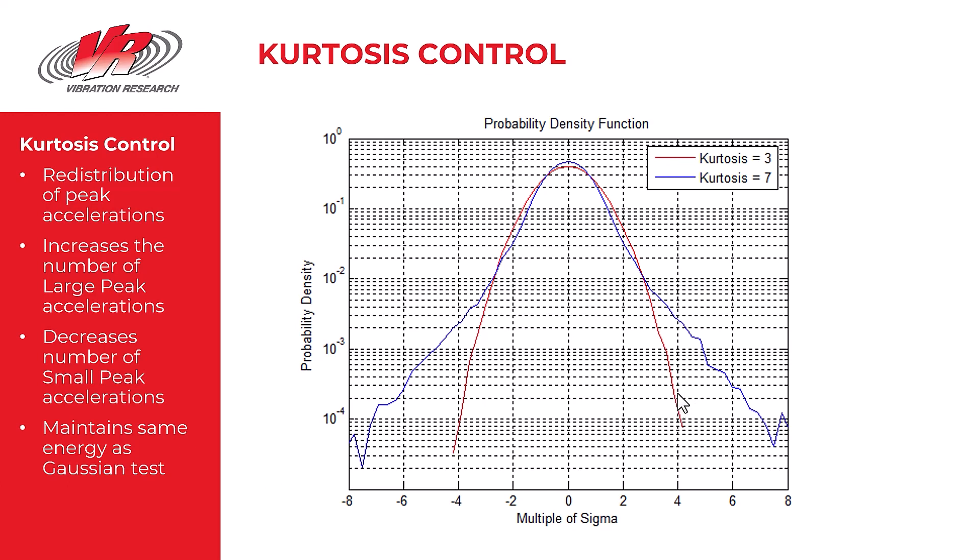And what we've done here is we've redistributed the accelerations under the Gaussian plot. And we've placed more at the tails giving more large peak accelerations. But in order to do that, we had to reduce the kinds of accelerations in this area of the curve. See that this blue line is lower than this red line.